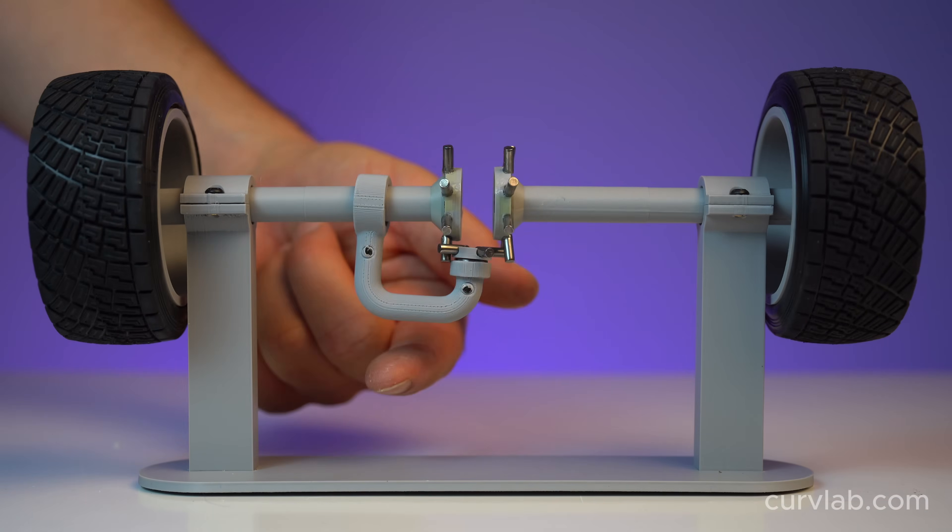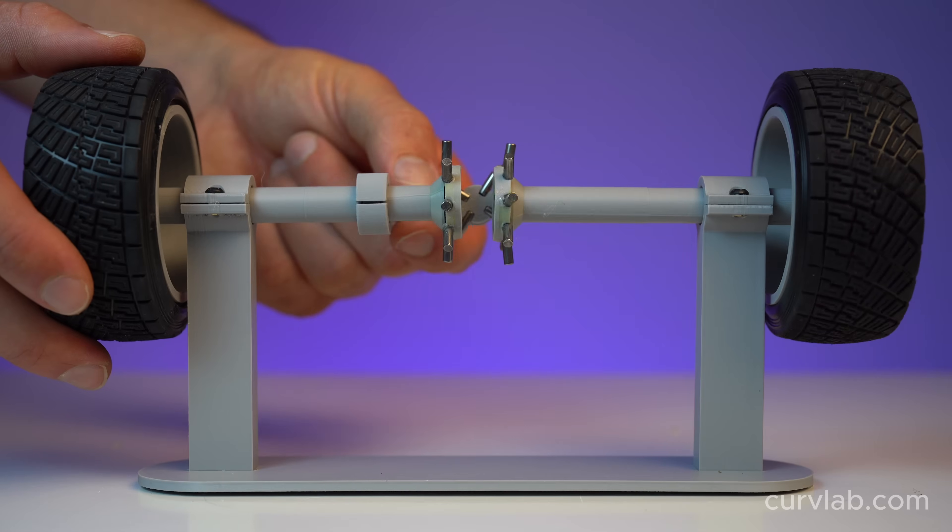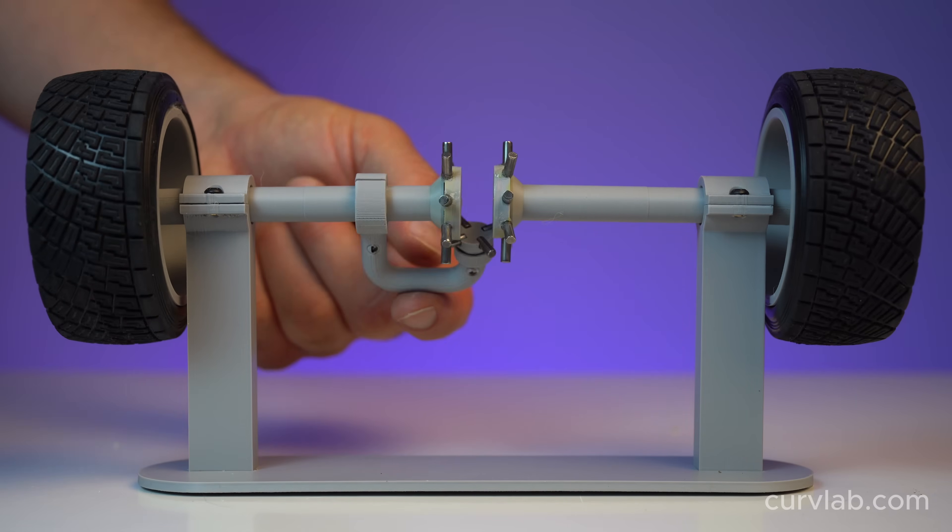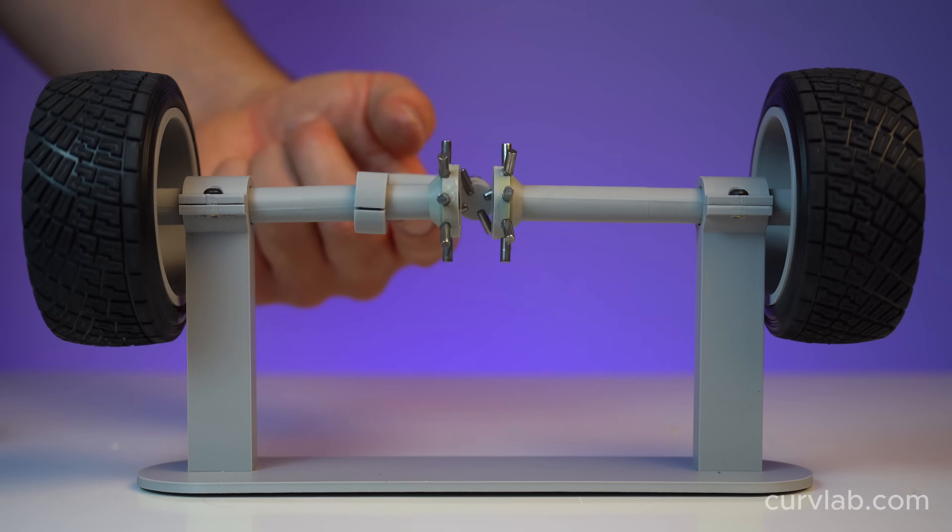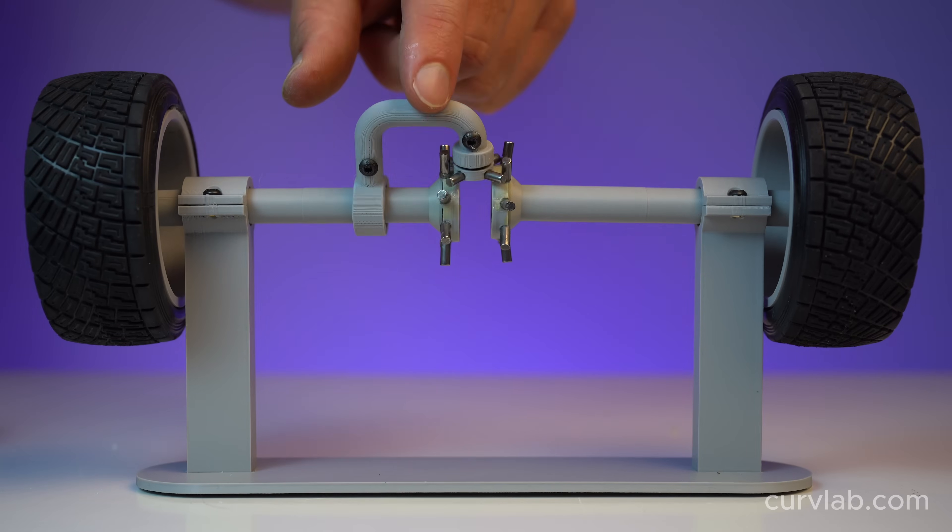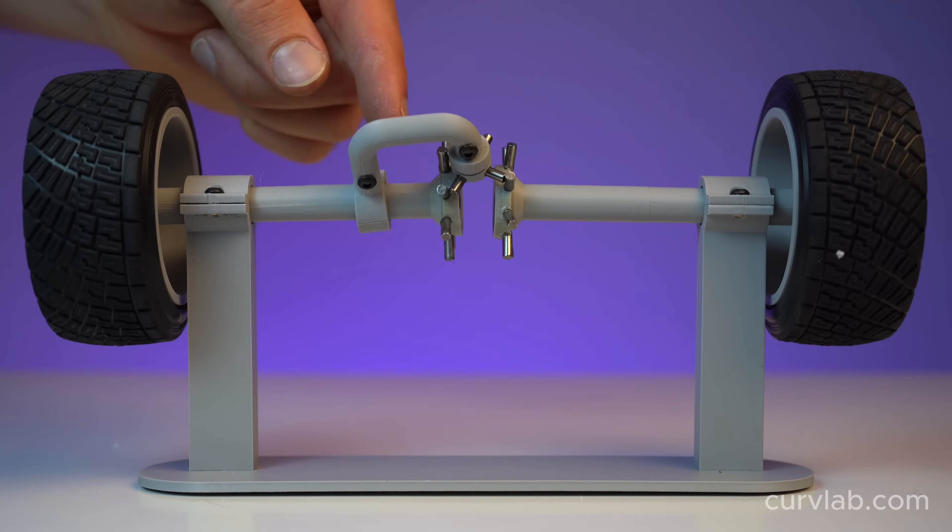Now, when we stop one wheel, the crossbars will continue to push the spokes of the freewheel around. And as long as both wheels are free to turn, the crossbars don't rotate on their pivot, and the wheels spin at the same speed.